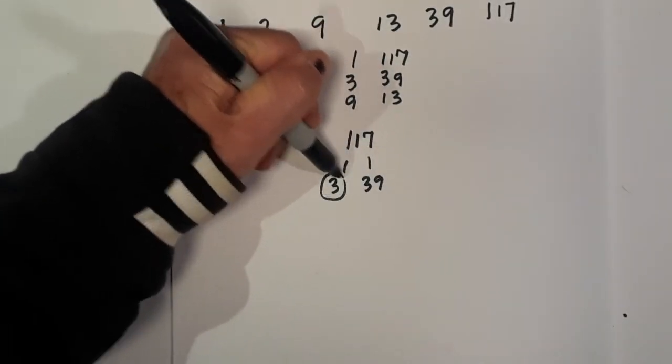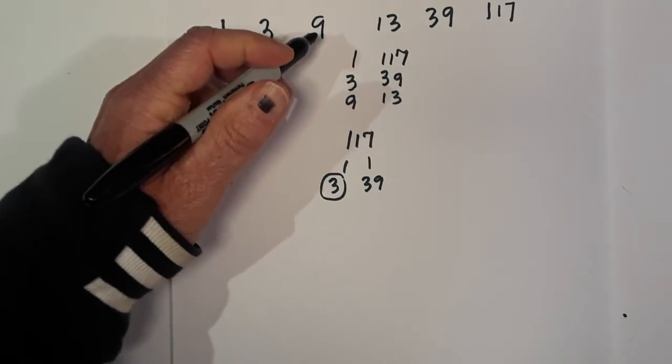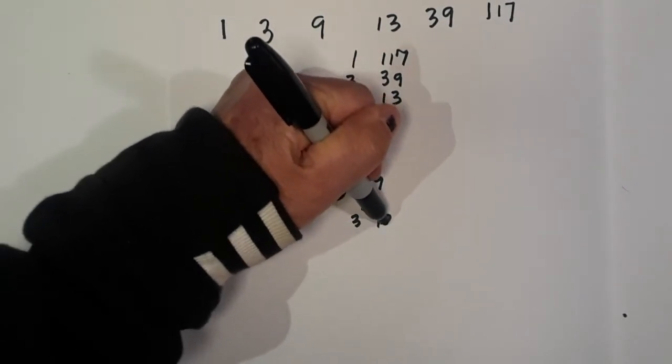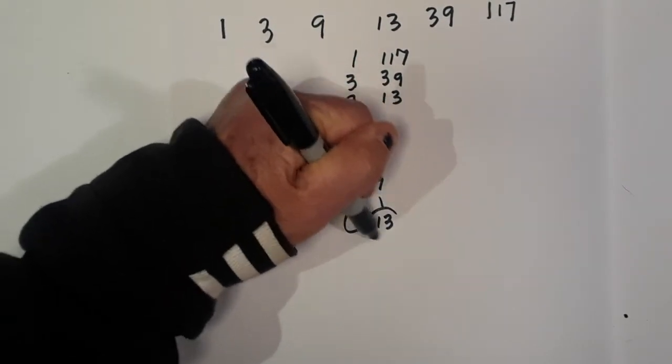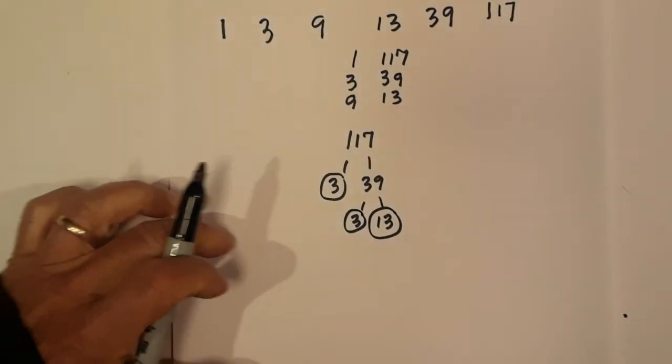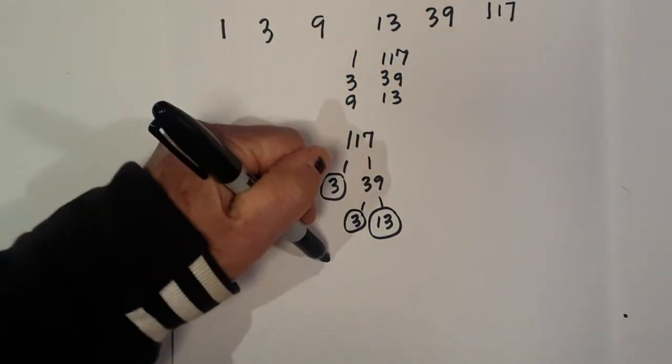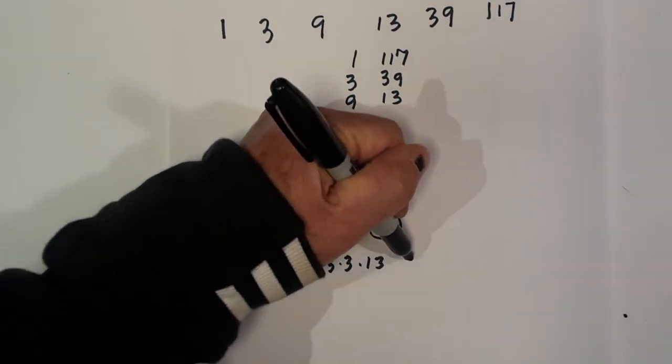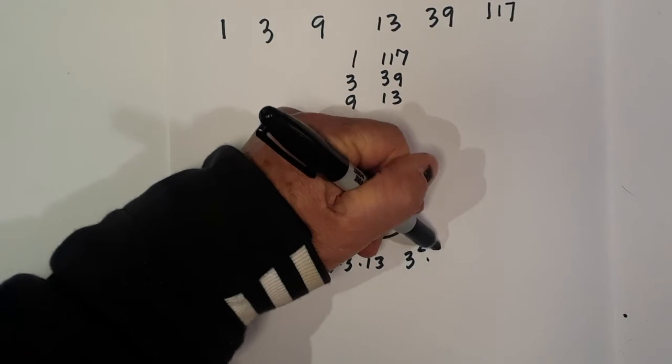Circle the 3 because it is prime. Now 3 times 13. Circle both of these because they're both prime. So the prime factors of 117 are 3 times 3 times 13, or 3 squared times 13.